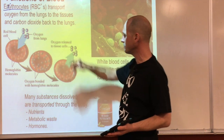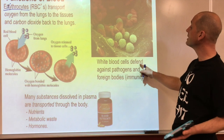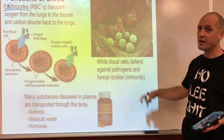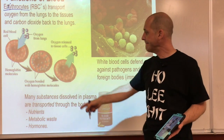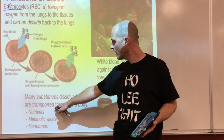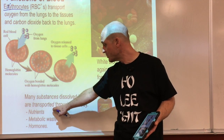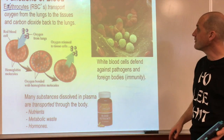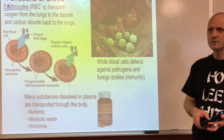White blood cells defend against pathogens and foreign bodies - that's an immune function. There's also a transport function: blood can transport nutrients, waste, or hormones and deliver them to the body - it's like a freeway system bringing things around.